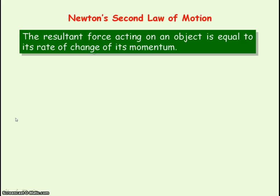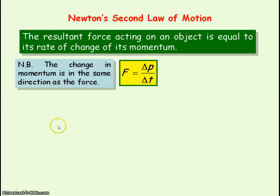Newton's Second Law of Motion states that the resultant force acting on an object is equal to the rate of change of its momentum. We can express this mathematically as: delta P divided by delta T, where delta means the change, P is momentum, and delta P over delta T is our rate of change of momentum.